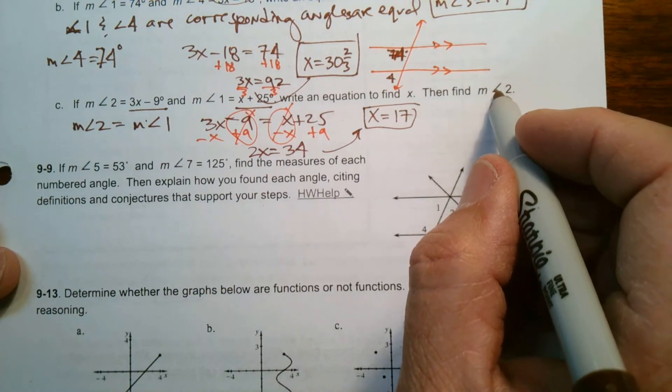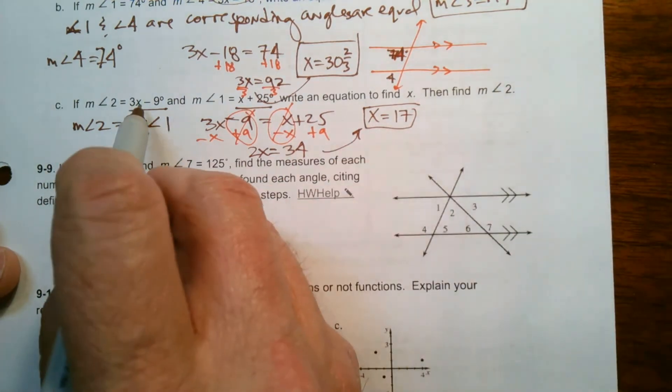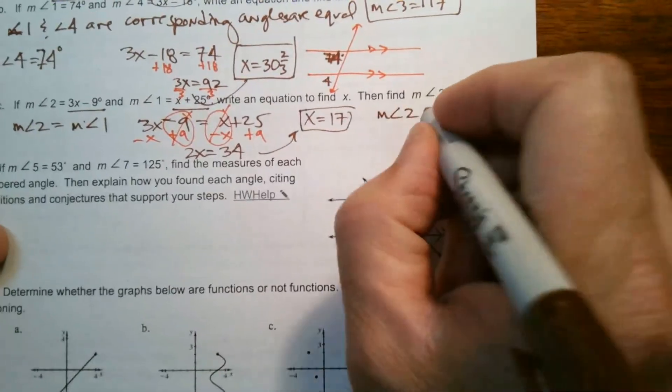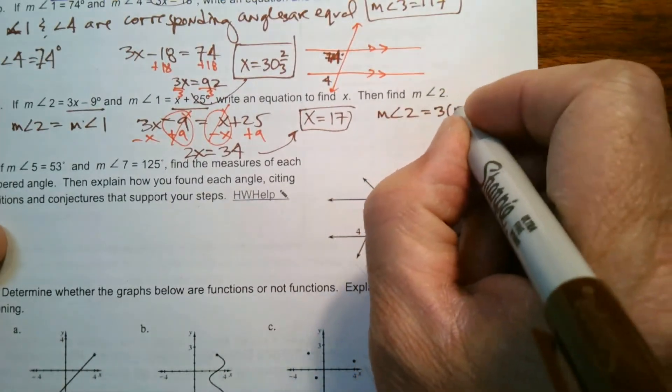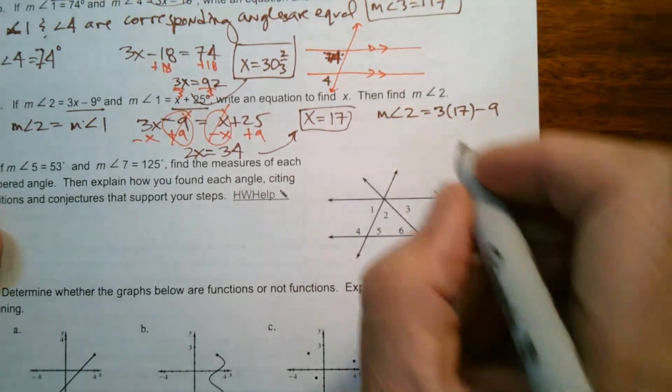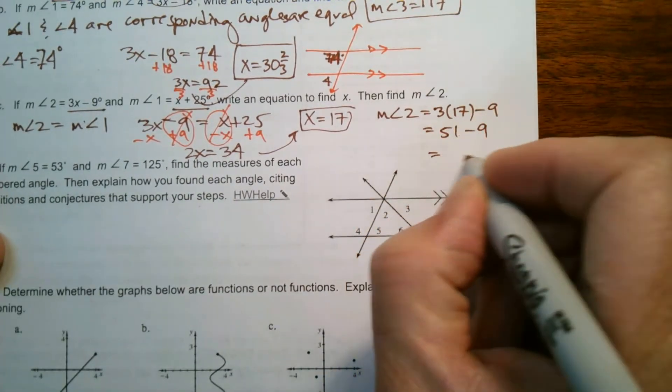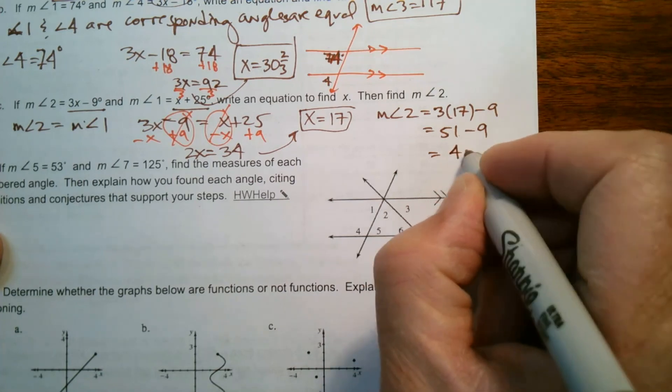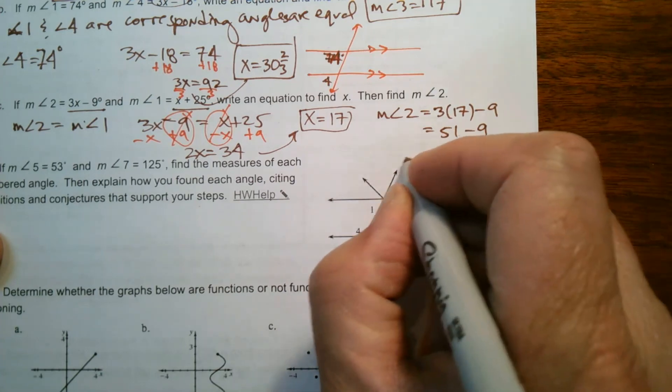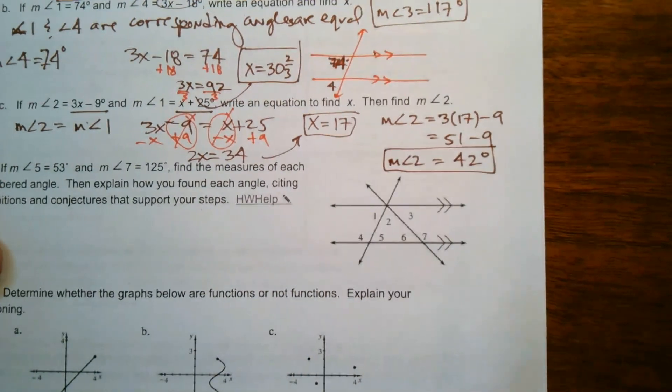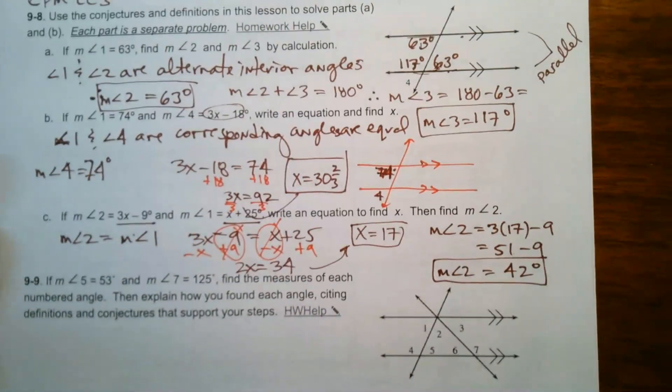Now it wants me to find the measure of angle 2. So if I put 17 back into my equation for measure of angle 2, it would be 3 times 17 minus 9. So 3 times 17 is 51. 51 minus 9 is 42. So the measure of angle 2 is 42 degrees. All right, there we go.